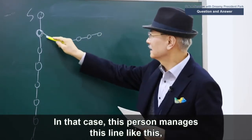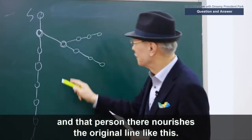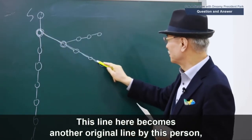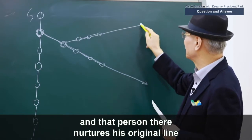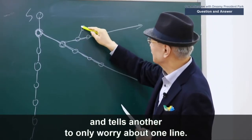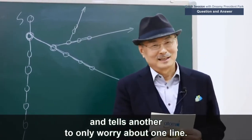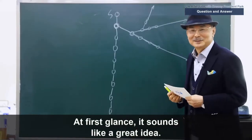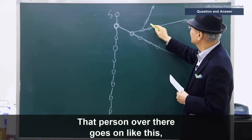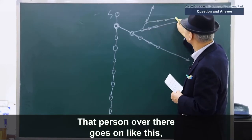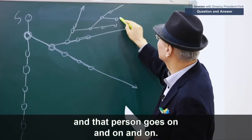In that case, this person manages this line like this, and that person there nourishes the original line like this. This line here becomes another original line by this person, and that person there nurtures his original line and tells another to only worry about one line. At first glance, this really does sound like a great idea. That person over there goes on like this, and that person goes on like this, and this person goes on and on and on.